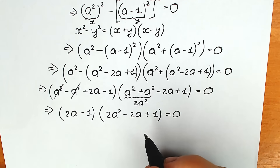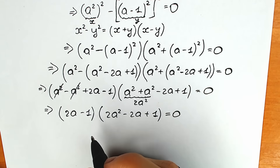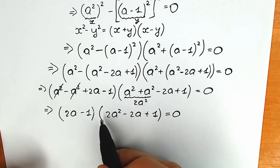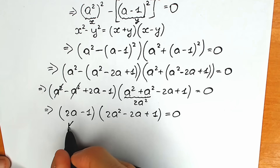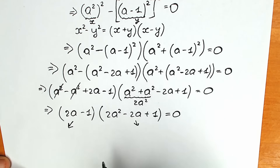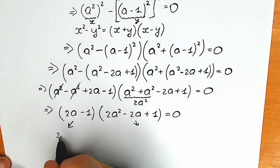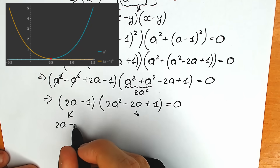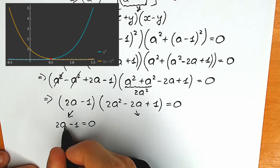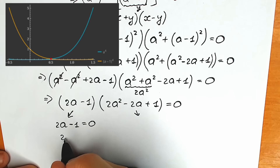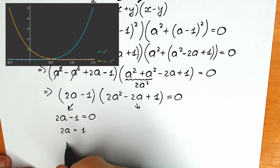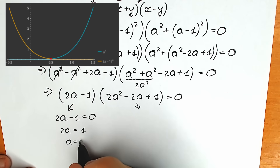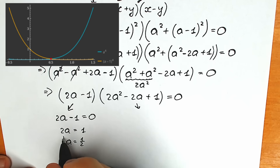Since a product of two parentheses equals zero when either factor equals zero, let's start with the first one: 2a minus one equals zero. From here, 2a equals one, and therefore a equals one half. This is our first root — we'll check it a little later.